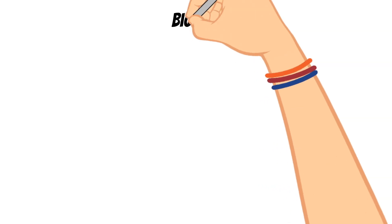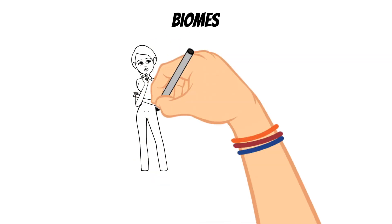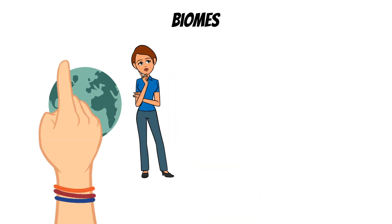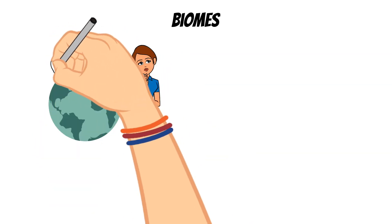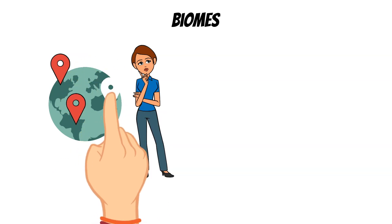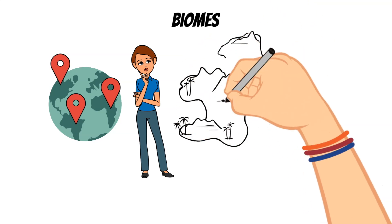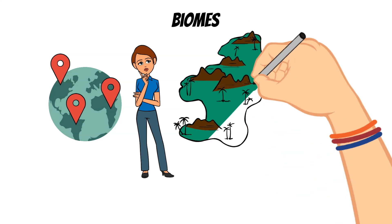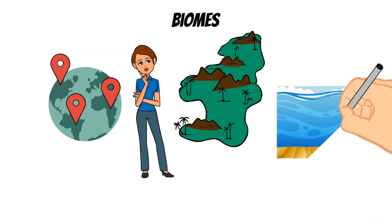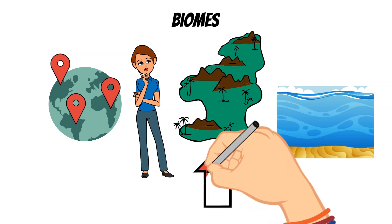Today, we are going to talk about biomes. But the first question we need to answer is: what are biomes? Well, biomes are parts of the world that have a similar climate, similar animals, and similar plants. There are land biomes called terrestrial biomes, and water biomes called aquatic biomes. Specifically today, we are going to talk about just the land biomes.